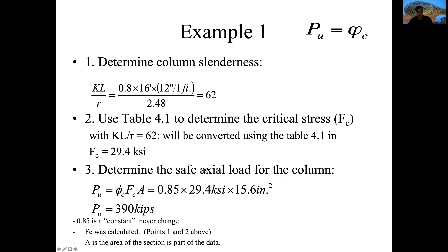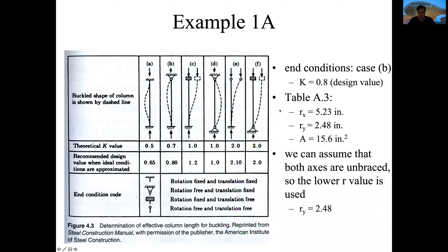Now we determine the safe axial load, which is the third step. The safe axial load PU equals 0.85 — which is the constant phi — multiplied by the critical stress FC of 29.4, multiplied by the area of the section which is 15.6. That gives us 390 kips. The factor 0.85 is a constant and will never change.